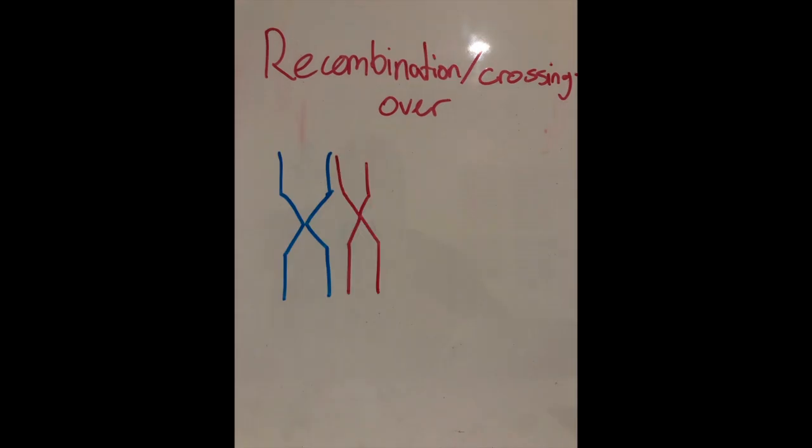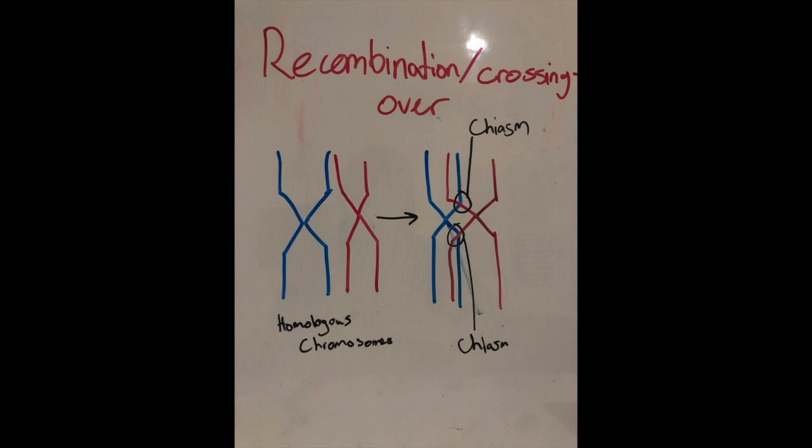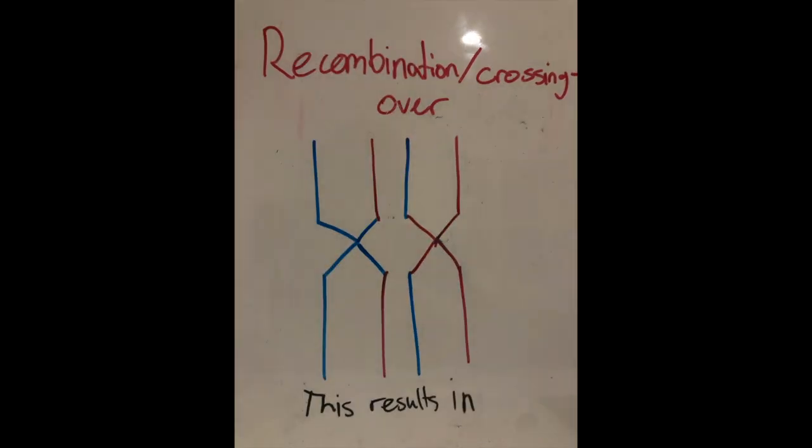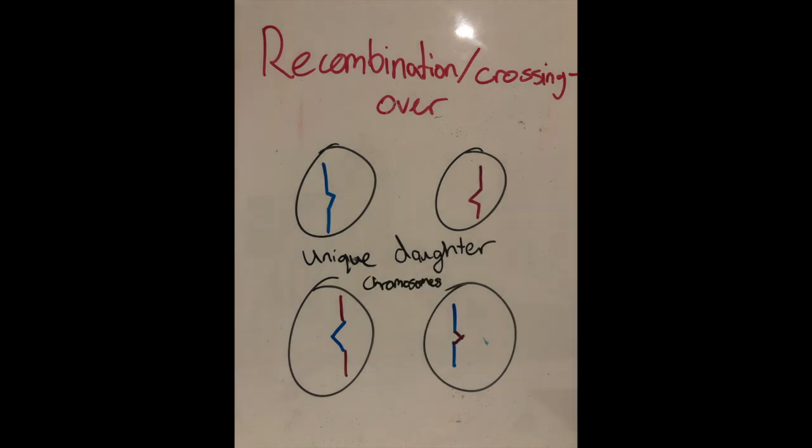Crossing over through recombination occurs when homologous chromosomes exchange genetic material between non-sister chromatids at the chiasma during late prophase. This causes genetic properties to be swapped between chromatids, then split up into different daughter cells.